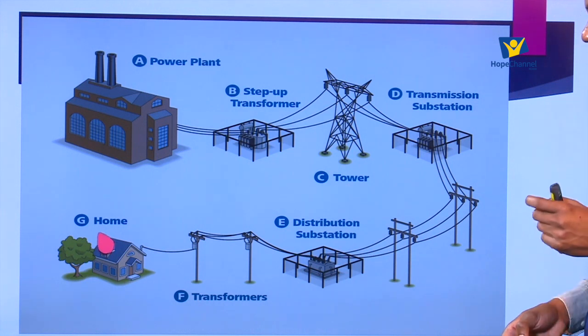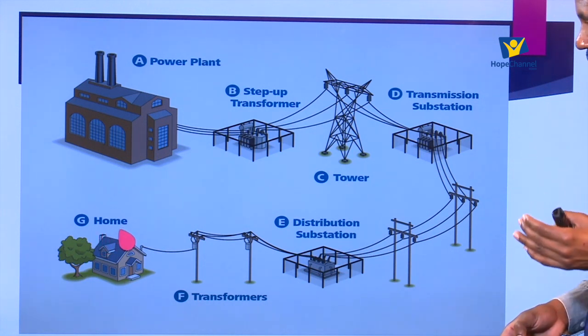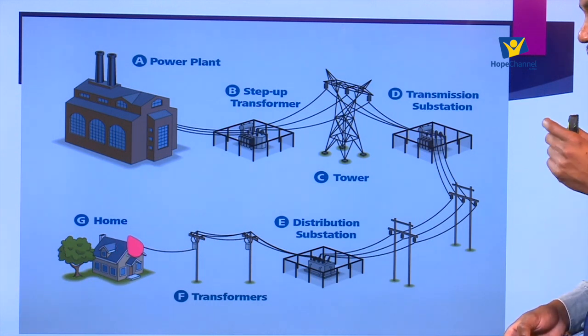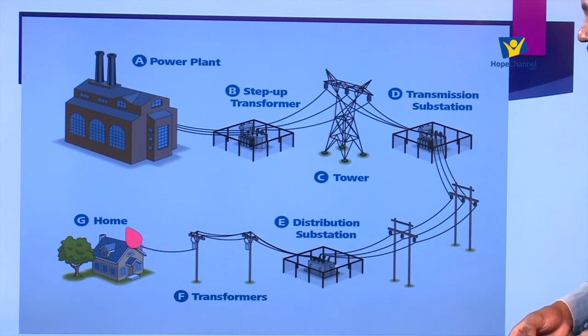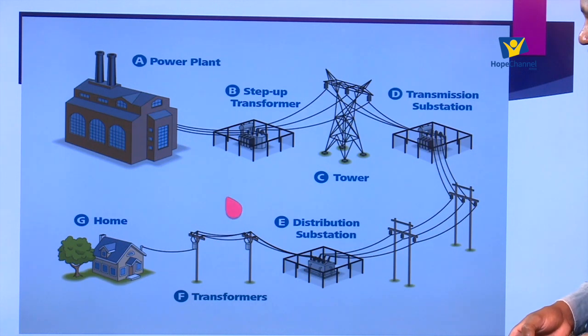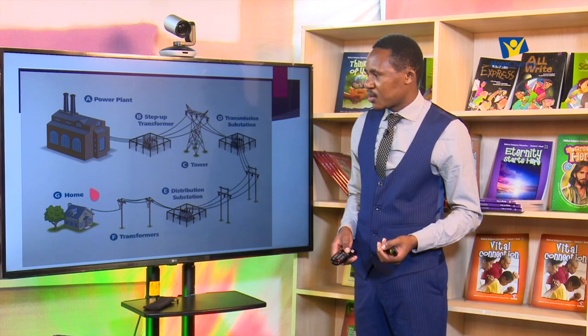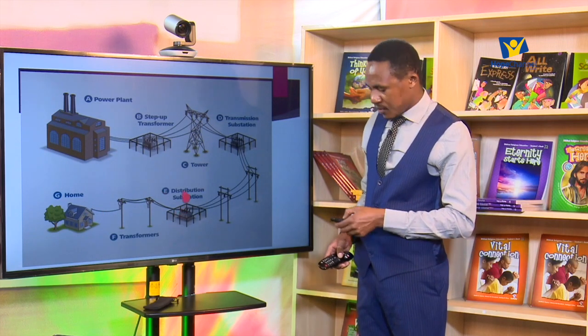Finally the power gets to our homes and we can use it to light the bulbs, watch TVs, play radios, or any other use in the house. The bulbs, sockets, and any other electrical fittings at home must have a connection all the way to the power plant. Should there be a disconnection anywhere, the electricity will not reach the home. That is what we were discussing before the short break.